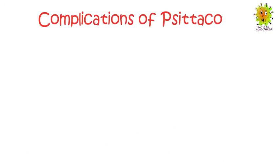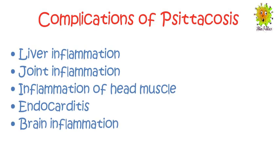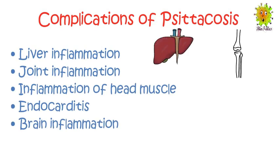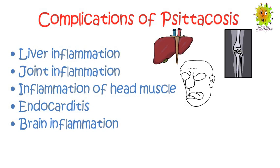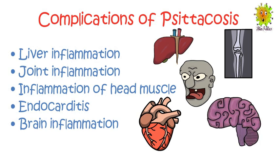In the case of complications, psittacosis may cause liver inflammation, joint inflammation, inflammation of the heart muscle, endocarditis, and brain inflammation. However, fatal cases reported from psittacosis are less than one percent.